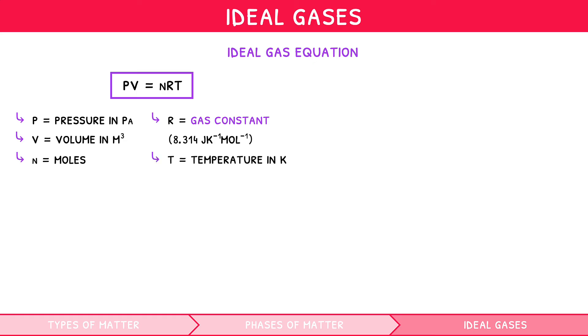The second formula is P1 times V1 over T1 equals P2 times V2 over T2. In this formula, P stands for pressure, V stands for volume, and T stands for temperature, again in Kelvin. However, in this formula, pressure and volume can be in any units, as long as they're the same on both sides of the equation.